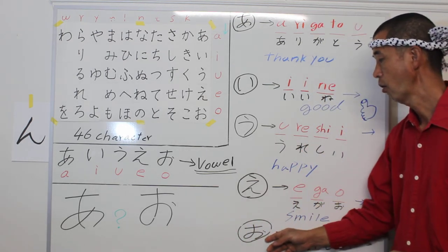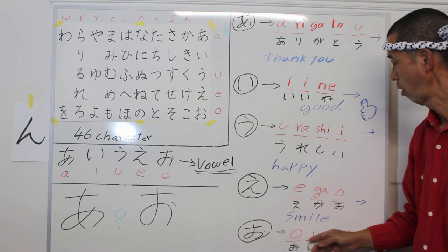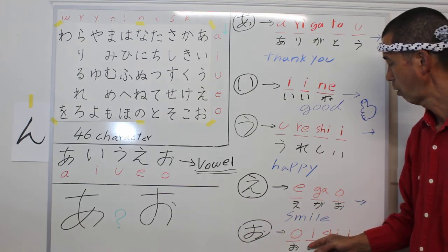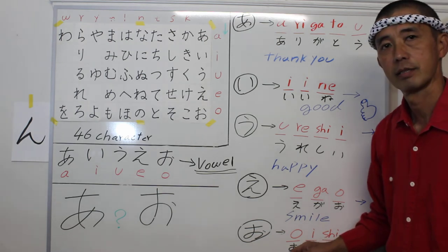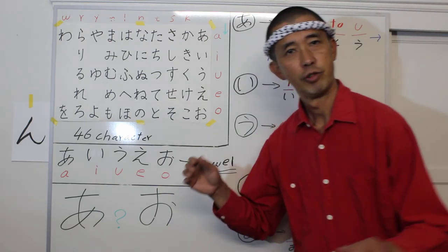Or for example, oishii. Oishii means delicious.